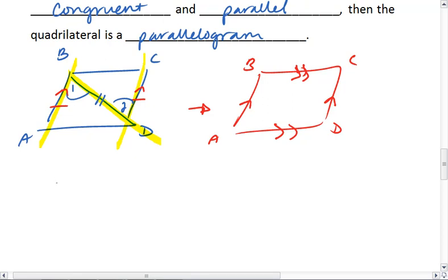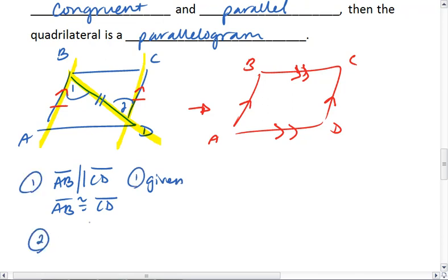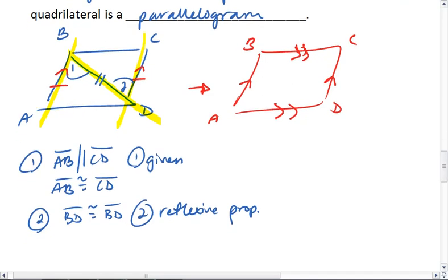So if I wanted to write that out, I would get that AB is parallel to CD and AB is congruent to CD, that is given. I then know that BD is congruent to BD by reflexive property. This means that angle 1 is congruent to angle 2 by the alternate interior angle theorem.